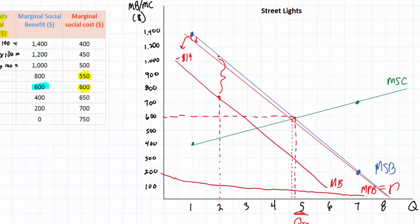In other words, the actual demand for street lamps will be almost zero despite the fact that everybody as a whole benefits from street lamps. Every individual has an incentive to free ride, so we end up with an equilibrium quantity of street lamps of zero in the free market. The free market quantity of street lamps will be zero because the marginal social cost will be higher than the marginal private benefit, since individuals will be unwilling to pay for street lamps once they have been provided.